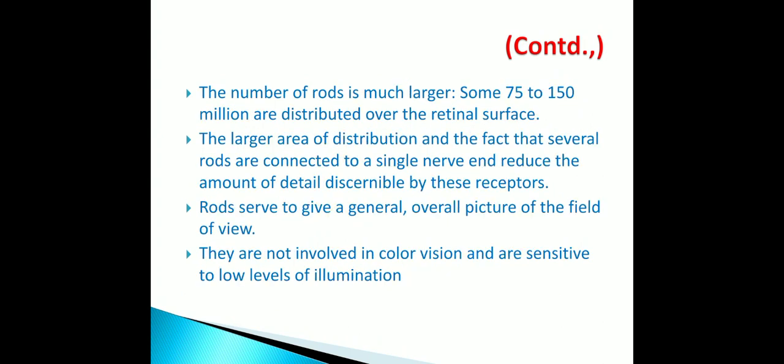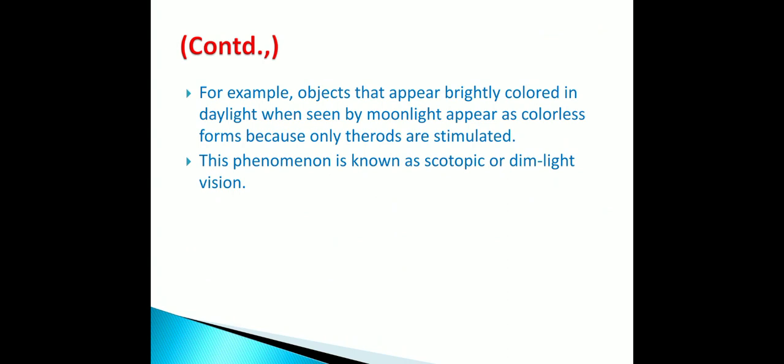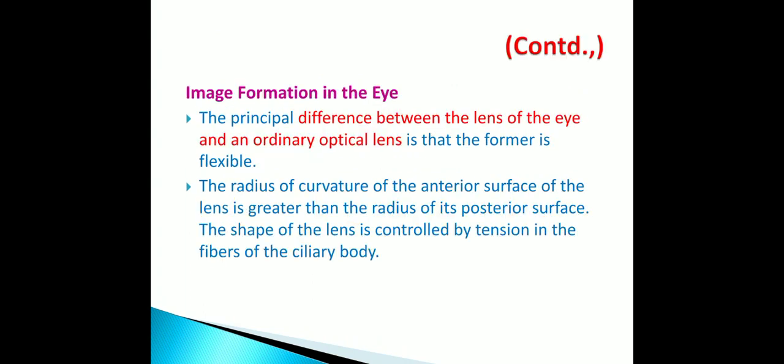The number of rods is much larger — 75 to 150 million — distributed over the retinal surface. Several rods are connected to a single nerve end, which reduces the amount of detail resolved. Rods serve to give a general overall picture of the field of view; they are not involved in color vision and are sensitive to low levels of illumination. For example, objects that appear brightly colored in daylight appear as colorless forms by moonlight because only rods are stimulated. This phenomenon is known as scotopic or dim light vision.